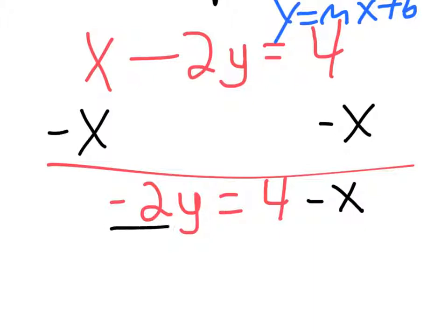So still trying to get y by itself. We can divide everything by negative 2. Not just once to each side with division. When you're dividing or multiplying, you need to do it once to each term to keep it balanced.